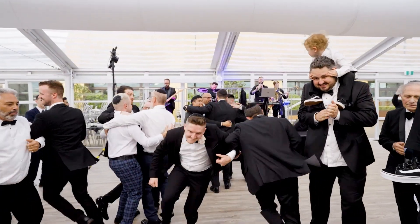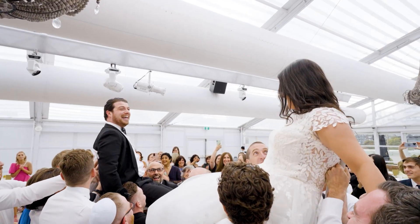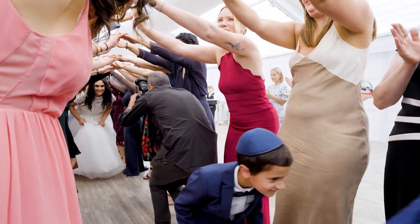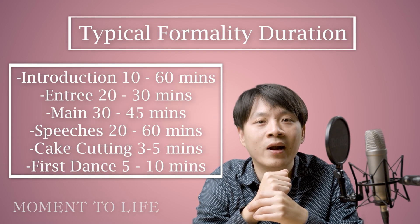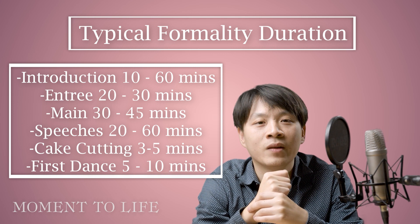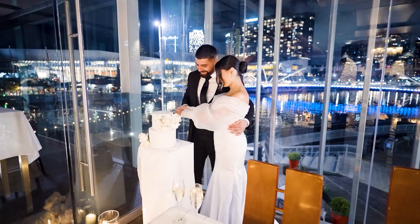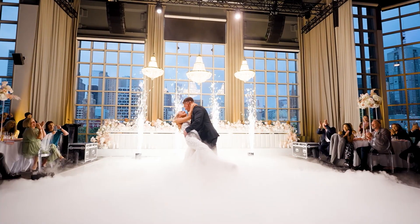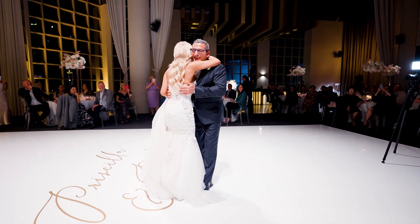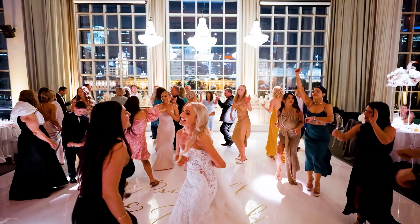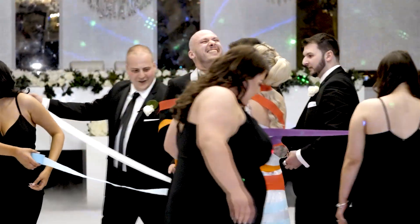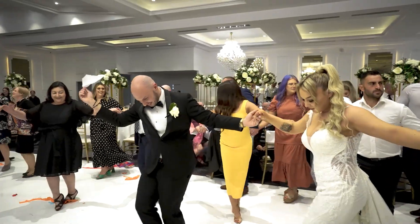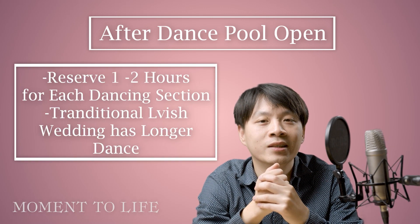Then we are served with the entrée, which is typically 20 to 30 minutes depending on how long your guest list is. This is followed by the mains, which take around 30 to 45 minutes. After that, we move into speeches for around 20 minutes to 1 hour, depending on how many guests are speaking. After the speeches, we get into something more interesting — the cake cutting and also the first dance, which typically takes around 10 to 20 minutes. Sometimes there will also be a father and daughter dance. When party time comes, you don't want to disturb your guests too much, so allow 1 to 2 hours on the dance floor for everyone to celebrate and enjoy. For some special lavish weddings, traditional dancing could last 3 to 4 hours into the night.